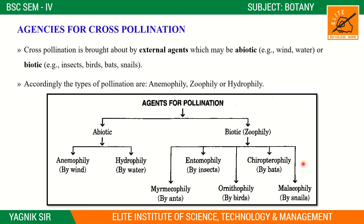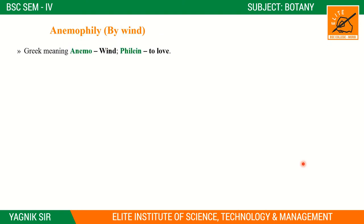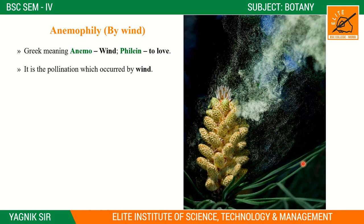The types of pollination based on agent are: anemophily (by wind), hydrophily (by water), and zoophily (by animals). Anemophily — 'anemo' means wind. These are the three basic types based on agent.